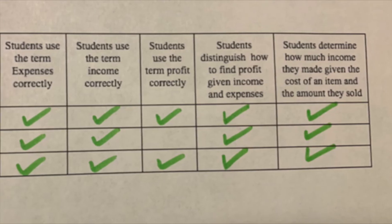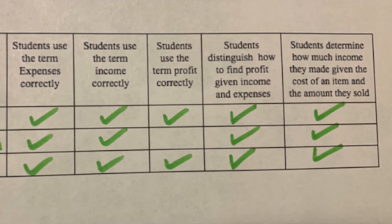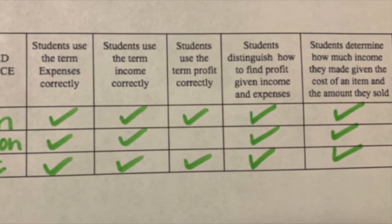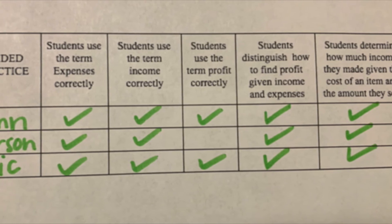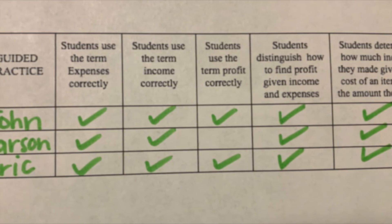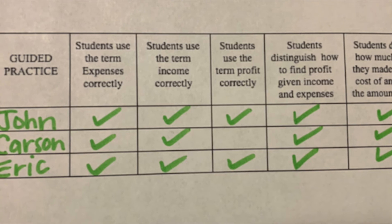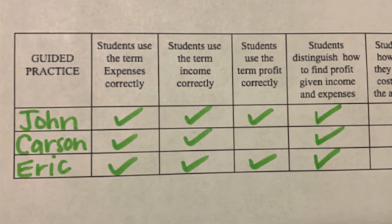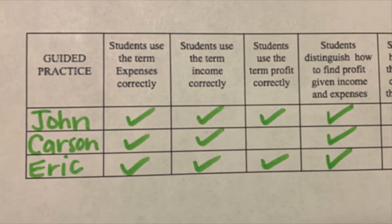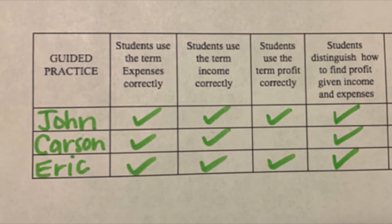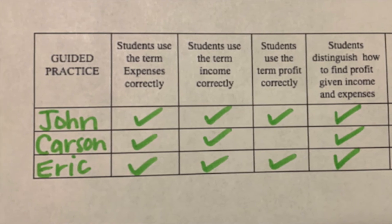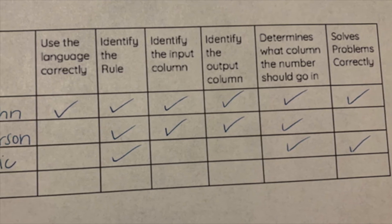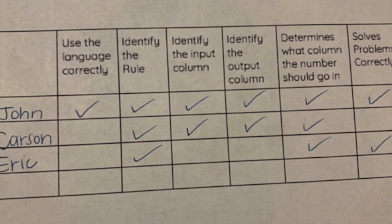Lastly, I created assessments for each lesson I gave to determine if students met my objective. The bulk of my assessments were formative, due to the fact that we did not get to independent practice in any of our sessions. I used mostly checklists and observation to assess how my students were doing. I would also ask students to hold up a number on their hands between one and three to assess their level of understanding.